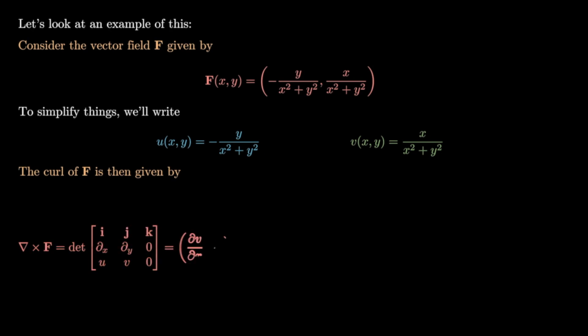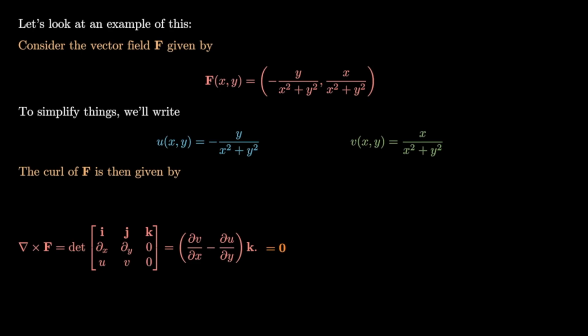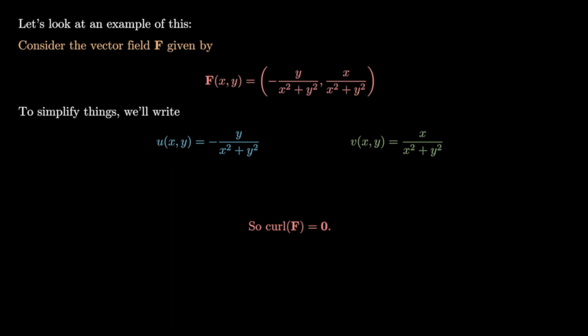The curl of f is given by the cross product of grad and the vector field — the determinant of the matrix — which gives the vector with k-th component specified by the x-derivative of v minus the y-derivative of u. The x-derivative of v is (y²-x²)/(x²+y²)², and similarly the y-derivative of u is also (y²-x²)/(x²+y²)². So the k-th component of the curl is zero, and the curl of this vector field is identically zero.